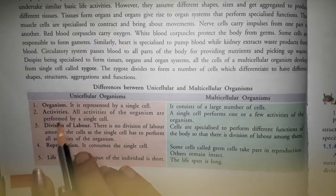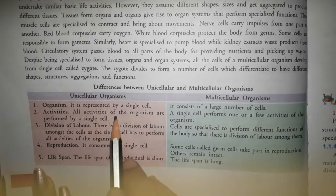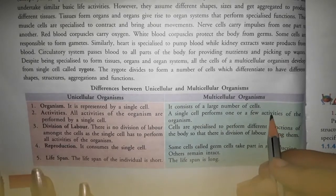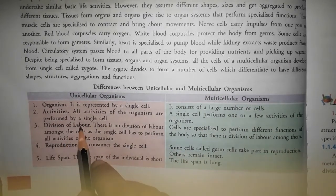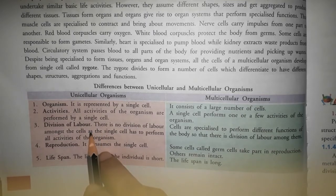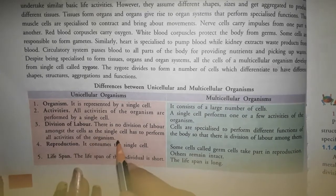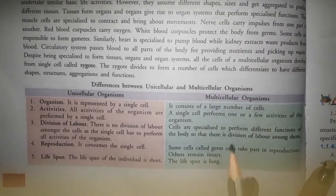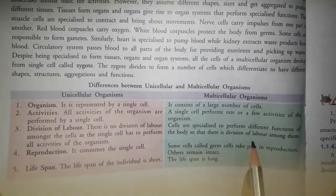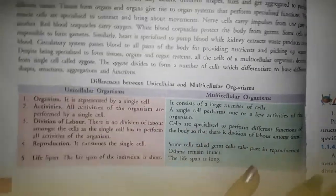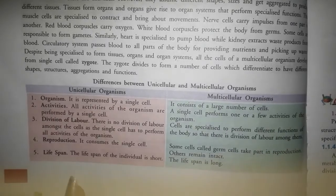Unicellular organisms में single cell ही सारी activities perform करता है. जबकि multicellular में एक single cell कुछ ही activities perform करता है - यहाँ division of labor होता है. Unicellular में एक ही single cell को सारे काम करने होंगे, जबकि multicellular में बहुत सारी cells होने की वजह से division of labor हो जाता है और हर एक cell specialized हो जाती है अलग-अलग function perform करने के लिए.